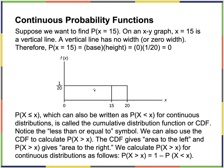Suppose we want to find the probability of x equals 15. On an x-y graph, x equals 15 is a vertical line. A vertical line has no width, so the probability at a specific point is 0. I could do less than 15 or greater than 15 in this 0-to-20 domain — probability less than 15 is 1 minus the probability greater than 15, so they're complements of each other.